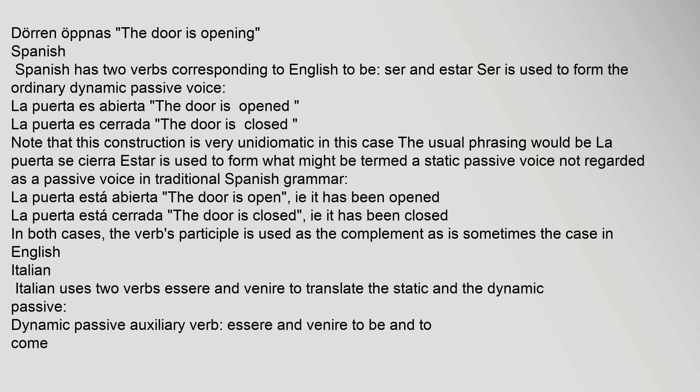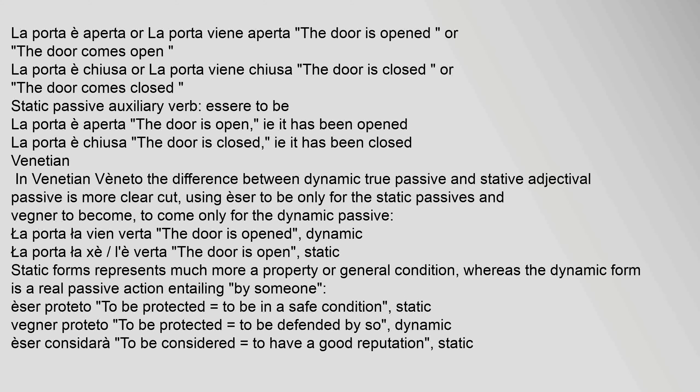Italian uses two verbs — "essere" and "venire" — to translate the static and the dynamic passive. For the dynamic passive, both "essere" and "venire" (to be / to come) are used: e.g., "La porta è aperta" or "La porta viene aperta" (The door is opened). For the static passive, only "essere" is used: e.g., "La porta è aperta" (The door is open, i.e., it has been opened) and "La porta è chiusa" (The door is closed, i.e., it has been closed).